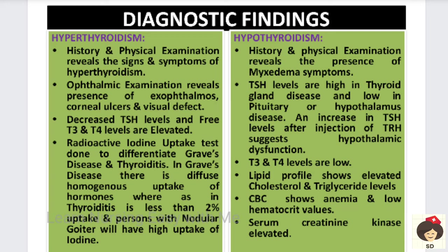Regarding diagnostic findings — in hyperthyroidism, history and physical examination will show signs of goiter. Ophthalmic examination will show exophthalmos, corneal ulcers, and visual changes. TSH levels, free T3 and T4 levels will all be elevated. Radioactive iodine uptake test will differentiate Graves' disease from thyroiditis — in Graves' disease there is homogenous uptake, whereas in thyroiditis there is only about 2% uptake. Persons with goiter will have high uptake of iodine, which helps differentiate the type of hyperthyroidism.